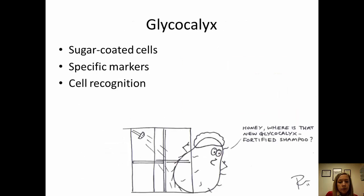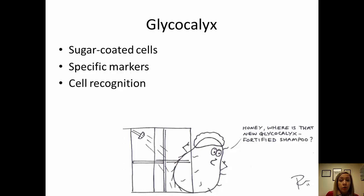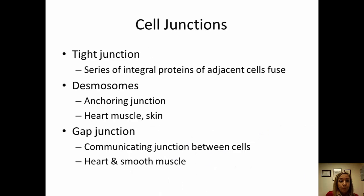The glycocalyx is another method for cells to recognize each other. It's a carbohydrate- or sugar-rich coating on the outside of cells, similar in function to the proteins we just discussed.